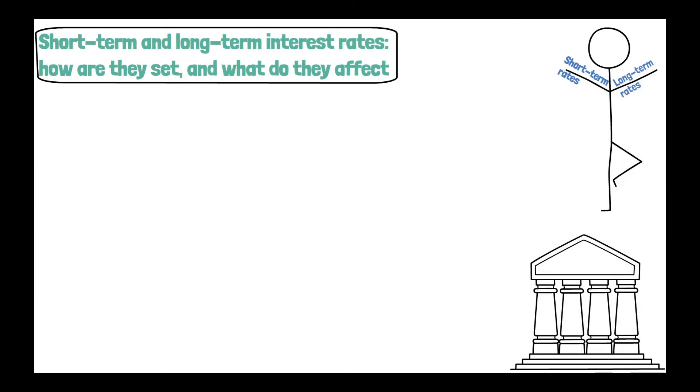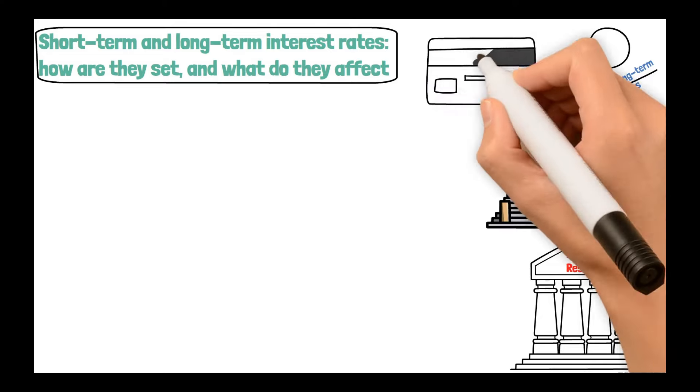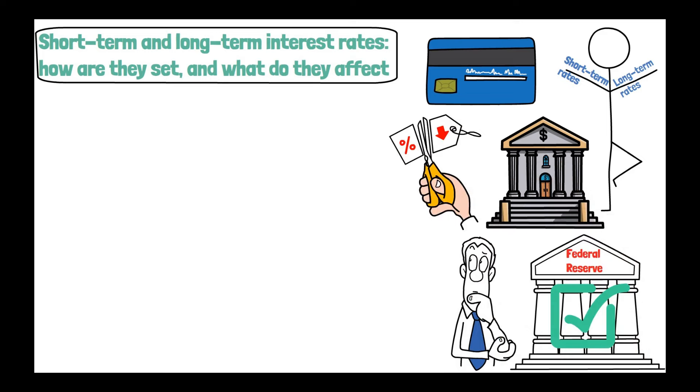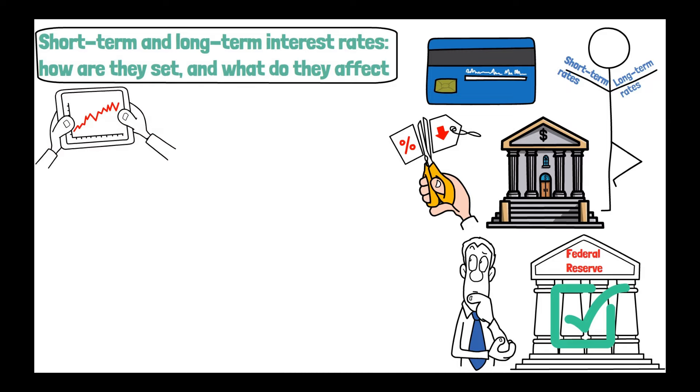Short-term interest rates are set by the central banks, like the Federal Reserve in the U.S. These rates are the heartbeat of the economy, influencing everything from your credit card interest to the rate on your savings account. Now, when the economy is overheating, central banks hike up rates to cool it down. And when it's sluggish, they cut rates to give it a caffeine kick.